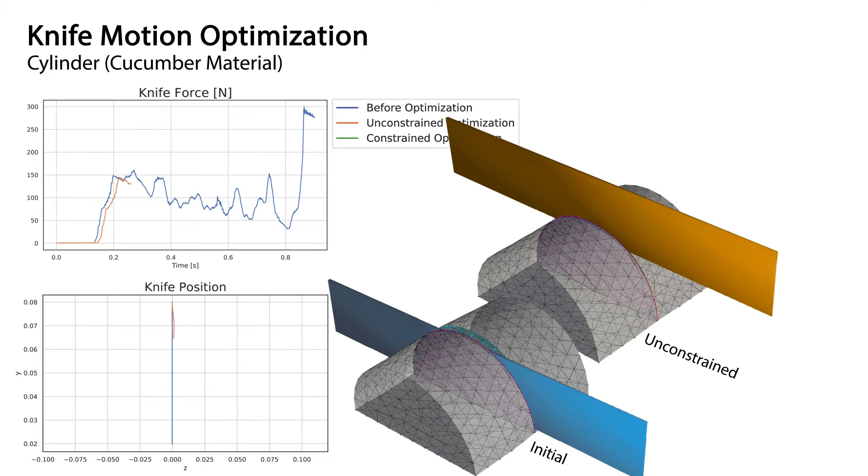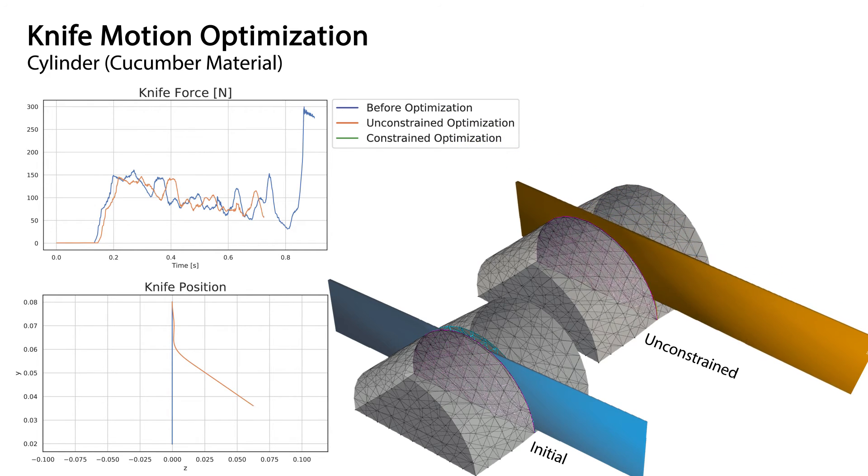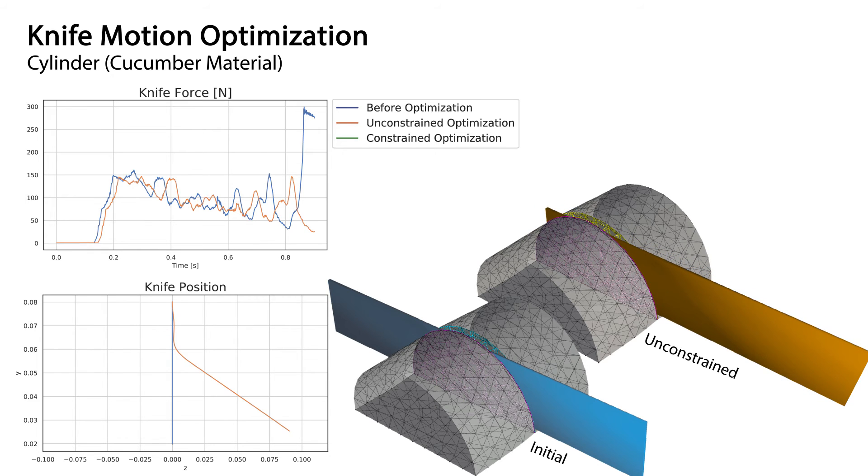After 50 iterations with Adam optimization, we see a reduction in average knife force by 15%. However, the knife slices sideways further than its blade length.